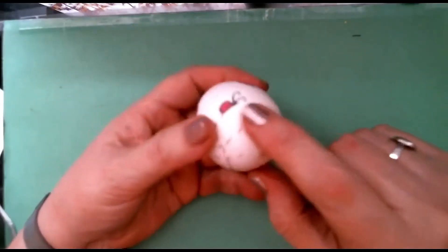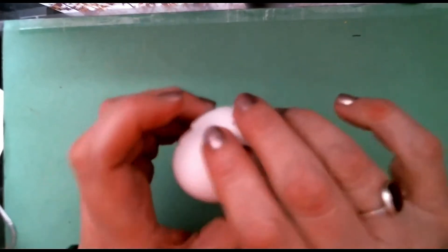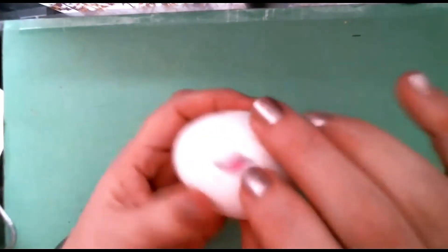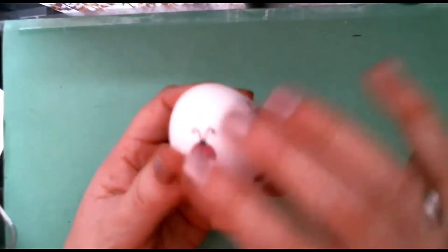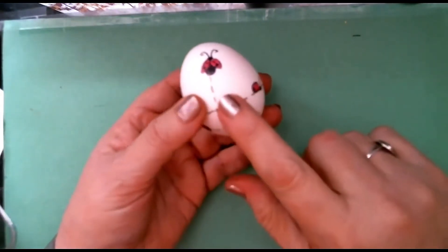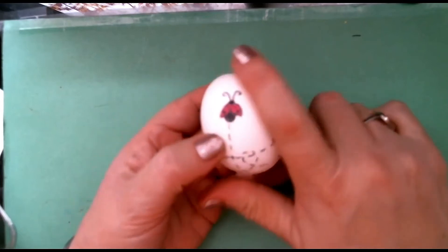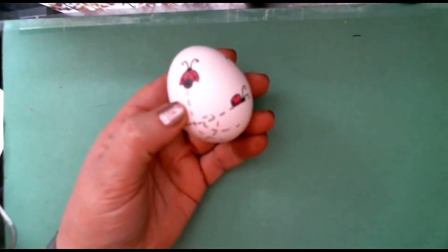So then I rinse it out really well with water as well as I can. Fill it with water, dump it out again, fill it with water, dump it out again a few times, dry it off, and I usually leave it overnight to dry so that I have a nice dry surface before I start drawing on it.